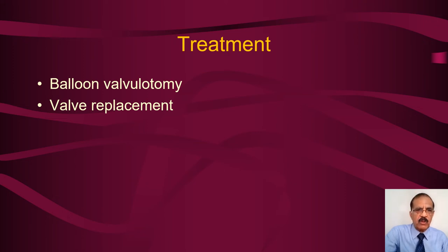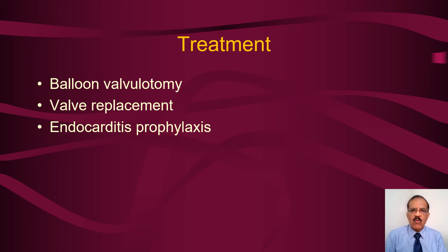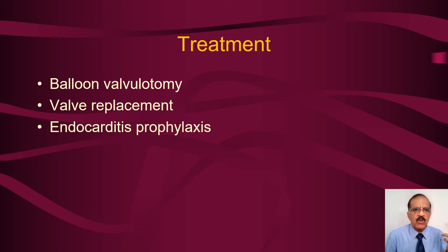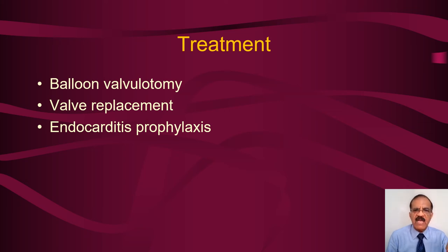Endocarditis prophylaxis: any patient with valvular or congenital heart disease is prone to develop endocarditis whenever they undergo a surgical procedure. Depending on the site of the procedure there is a risk of bacteremia, which may be followed by endocarditis. The specific bacteria depend on the procedure — dental procedures produce different bacteria than colonoscopy or urogenital procedures — so an antibiotic is chosen accordingly, usually given intravenously starting 24 hours before and continued 48 hours after surgery to prevent bacteria settling on the valves.